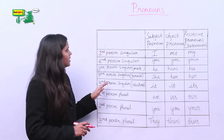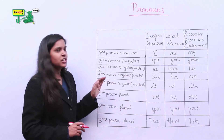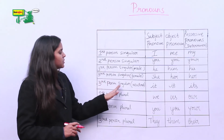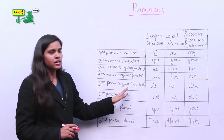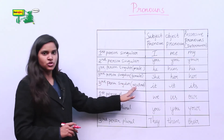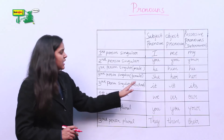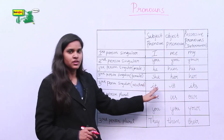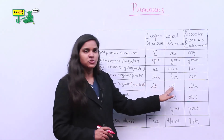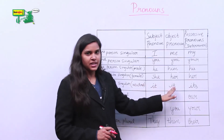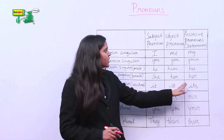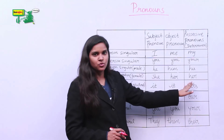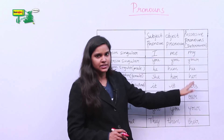The subject pronoun of third person singular neutral is it, the object pronoun is it, and the possessive pronoun is its.